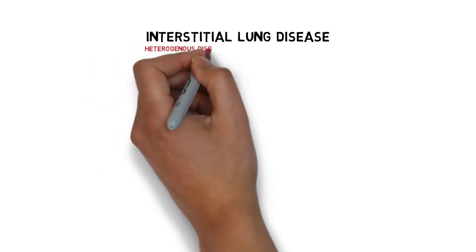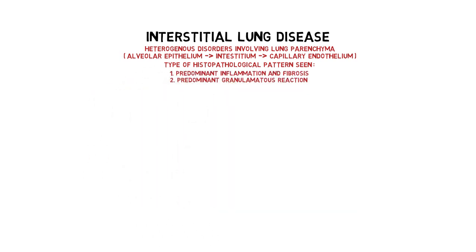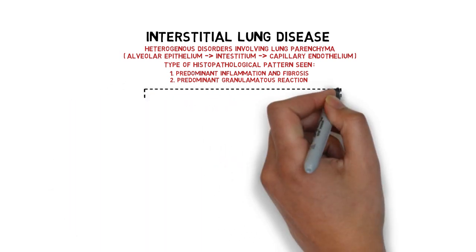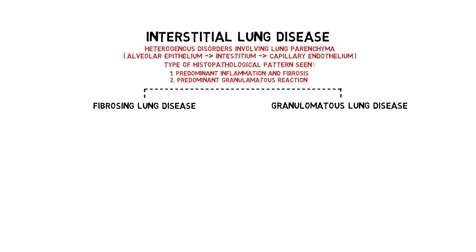The last topic before clinical features: interstitial lung disease. This is a group of heterogeneous disorders involving the lung parenchyma — the alveolar epithelium, interstitium, and vascular endothelium. We can classify them based on histopathological patterns: predominantly inflammation and fibrosis (fibrosing lung disease) or predominantly granulomatous reaction (granulomatous lung disease). There are also pulmonary hemorrhagic syndrome, eosinophilic syndrome, and others according to Robbins' pathology.